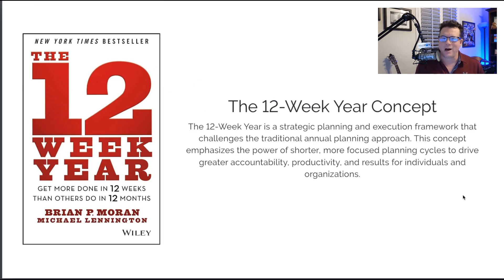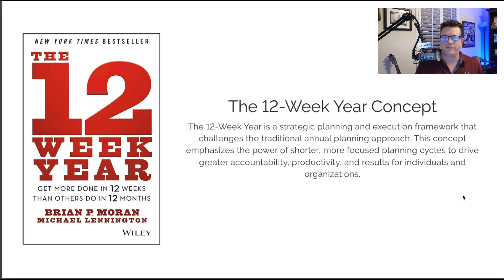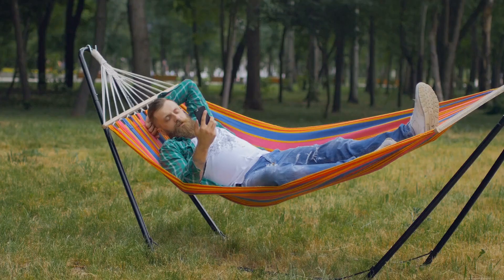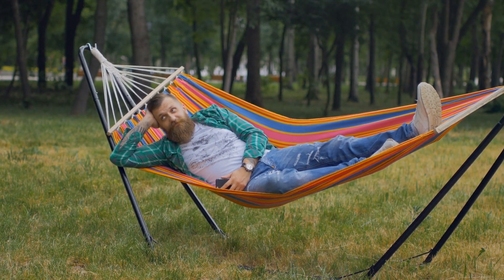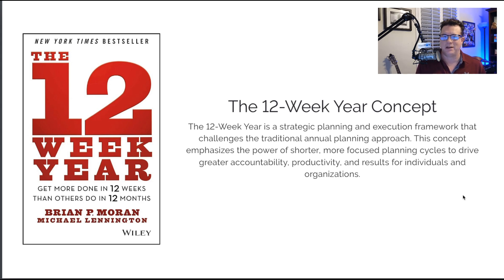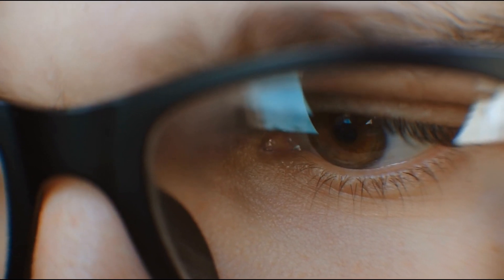The 12-week year concept is simply that you can do as much in 12 weeks as most people do in a year by really focusing on a quarter at a time. The idea is that a year is really too far for humans to plan for and actually be productive. If you're thinking about something that doesn't need to be done until December and it's February, that seems really far off. But if something needs to be done five, six, or eight weeks from now, you can really get focused and get things done productively.